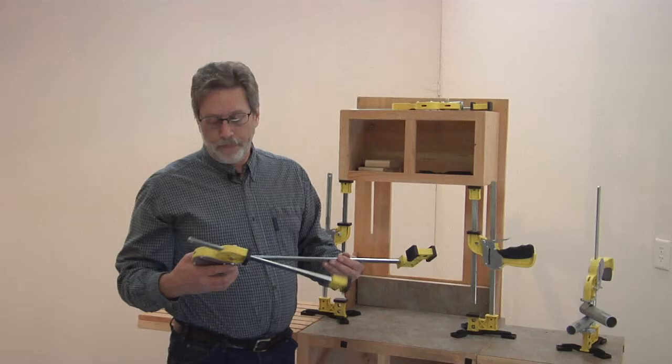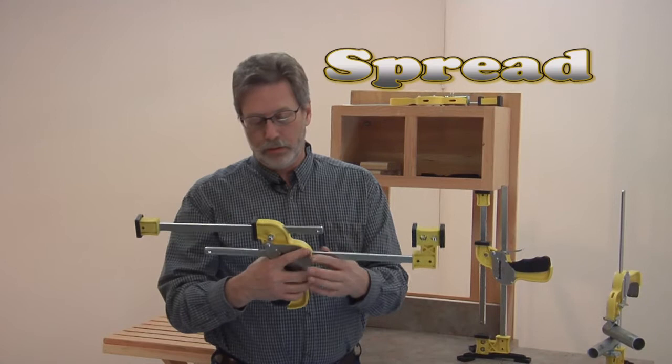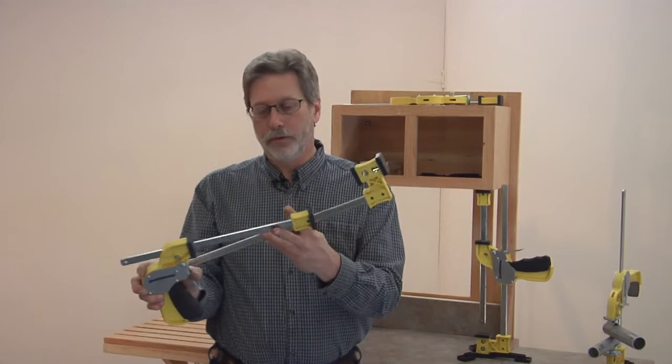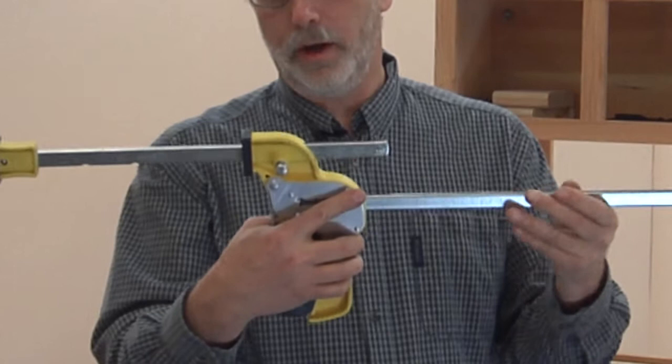You turn the bar around backwards, you now have a spreader. When you are putting the bar in either way, backwards or forwards, you want to pull the trigger in halfway and then you wiggle the bar slightly and it will slide right in. Same with doing it backwards, pull the trigger in halfway and it will slide right in.